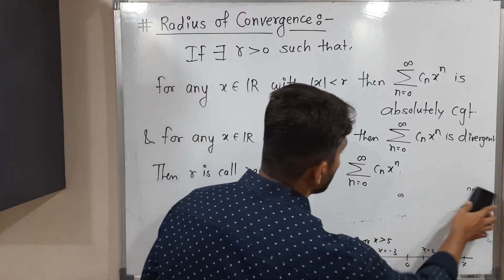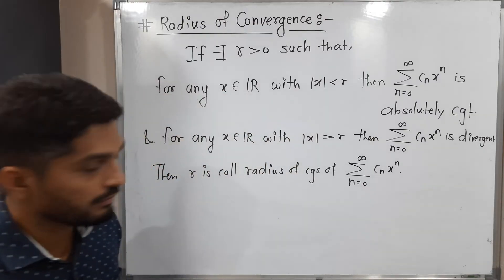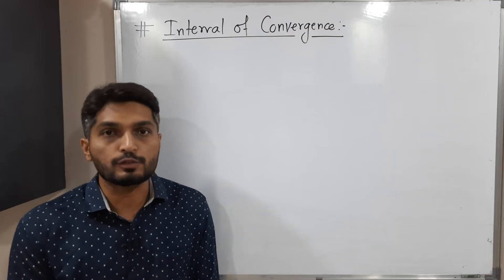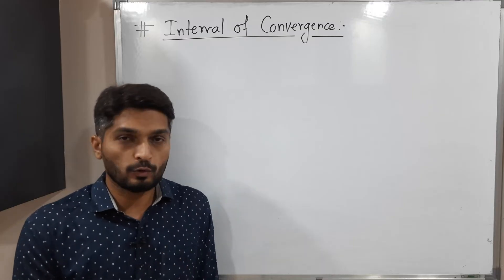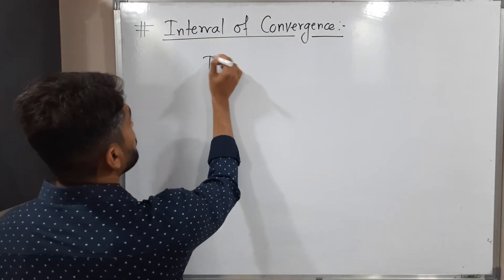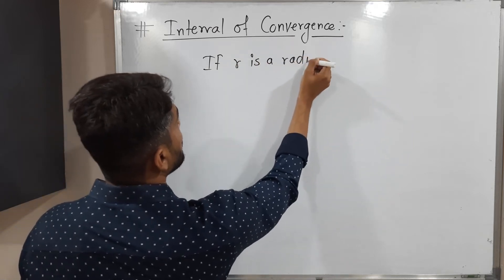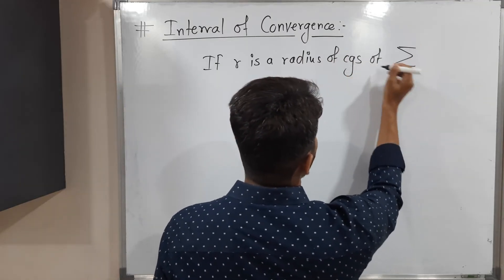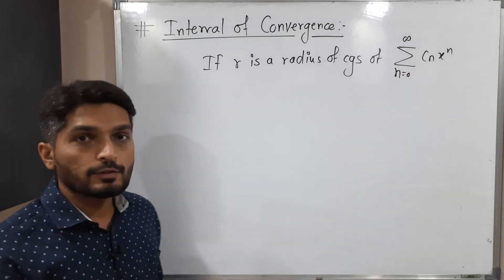After that, we are going to discuss the definition of interval of convergence. The next concept is interval of convergence, which is associated with the concept of radius of convergence. Suppose we have a power series having a radius of convergence r. If r is the radius of convergence of this power series — summation n running from 0 to infinity of c_n x raised to n — then r is the radius of convergence.